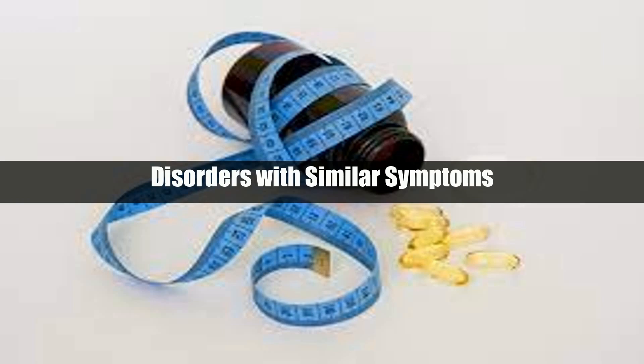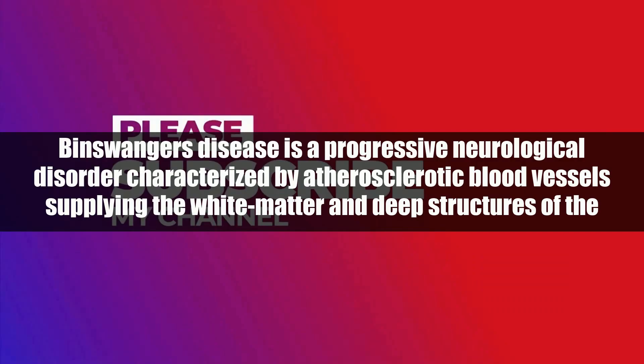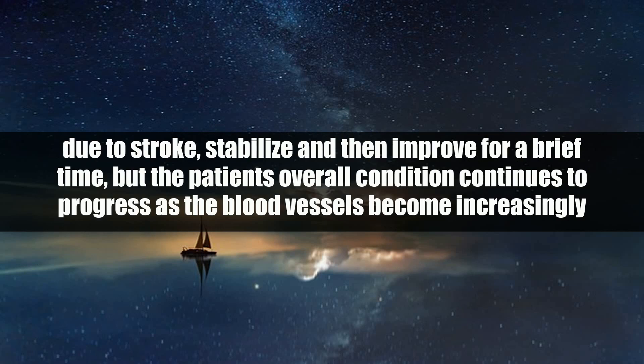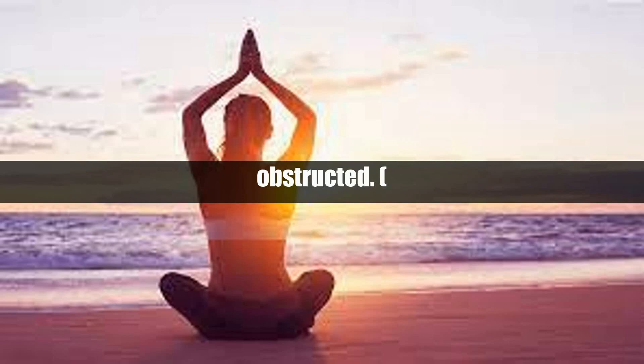Disorders with similar symptoms. Binswanger's disease is a progressive neurological disorder characterized by atherosclerotic blood vessels supplying the white matter and deep structures of the brain, including the basal ganglia and thalamus. Due to their vascular etiology, the symptoms associated with Binswanger's disease may suddenly worsen due to stroke, stabilize, and then improve briefly, but the patient's overall condition continues to progress as the blood vessels become increasingly obstructed.